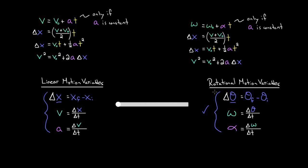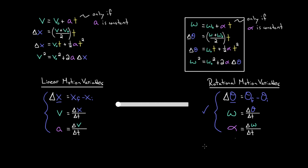When are these rotational kinematic formulas valid? When alpha — the angular acceleration — is constant. Wherever you had an x, the regular position, you replace it with theta, the angular position. We replace all accelerations with angular accelerations, and clean up the omega-initial and omega-final terms. These are the rotational kinematic formulas. They're only true if the angular acceleration is constant, but when it is, they're a convenient way to relate all the rotational motion variables, and you can solve a ton of problems with them.